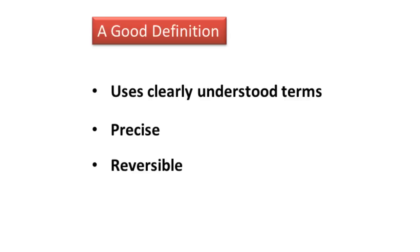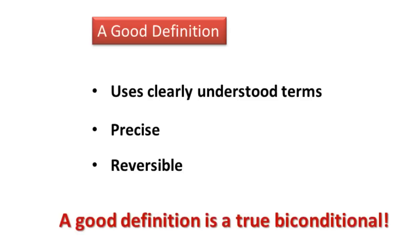Now, let's talk about a good definition. A good definition always uses clear, understood terms. It is precise, and it is reversible. And that word reversible is the whole reason that we just learned about the biconditional statement. A biconditional statement is considered reversible. So a good definition is always a true biconditional statement.